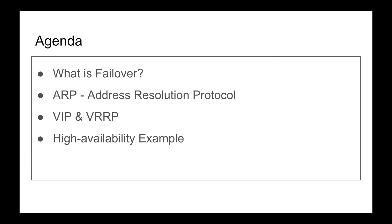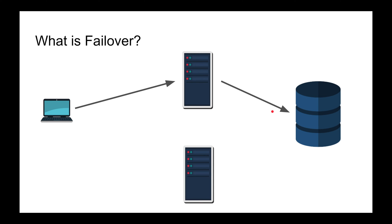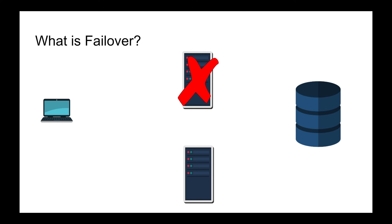Let's talk about what failover actually is. Let's assume I have a client connecting to a server or machine, making a request that eventually hits a database somewhere. Failover is when that machine goes down and the client automatically directs requests to another machine in the same cluster. The key here is that the client has no idea that a failover happened — it didn't change an IP address or check for availability; it just happened.